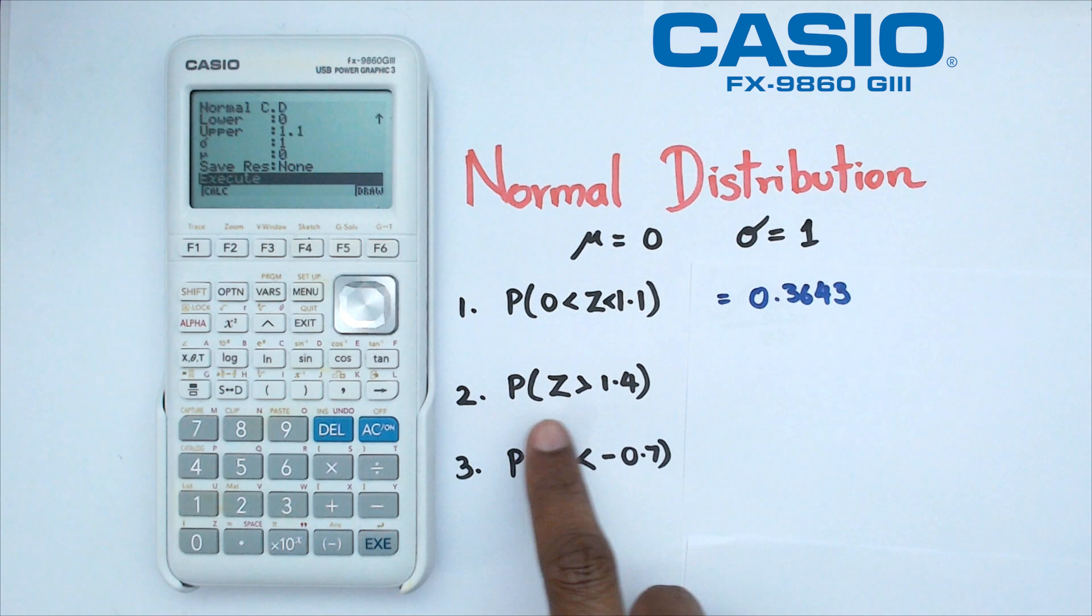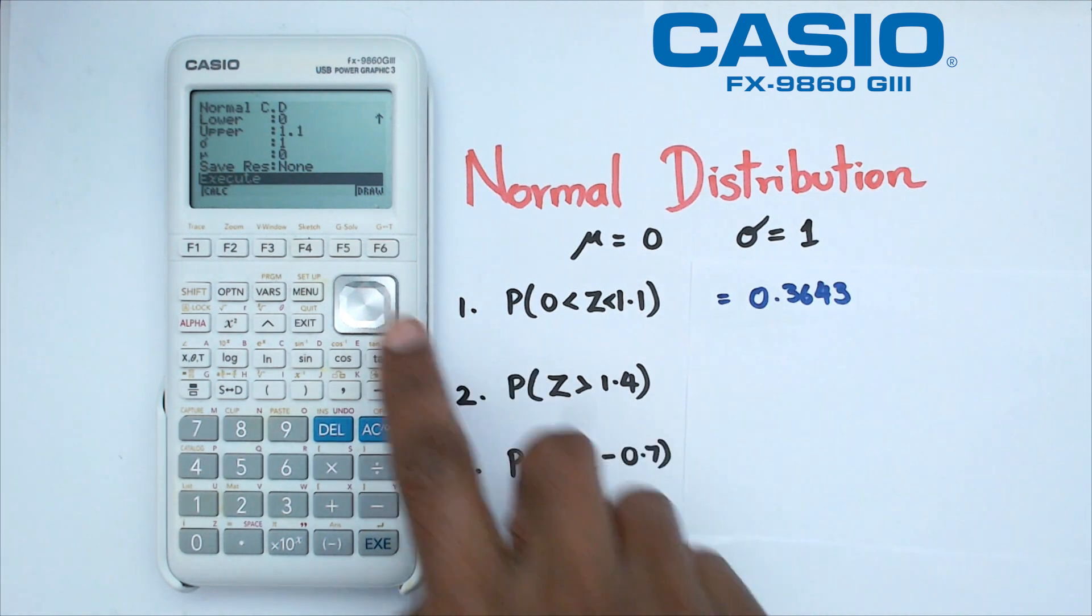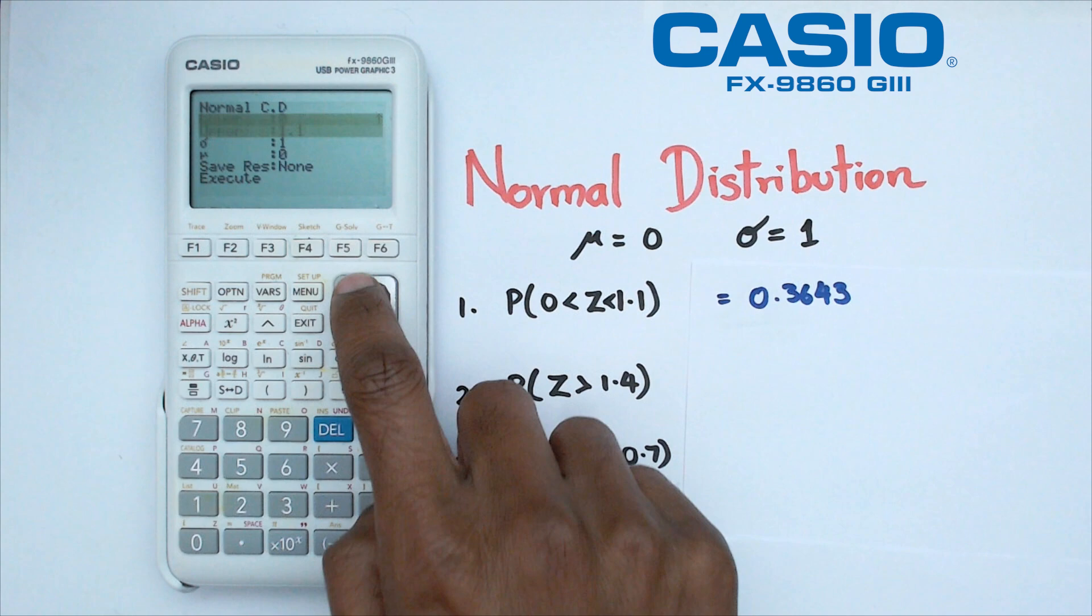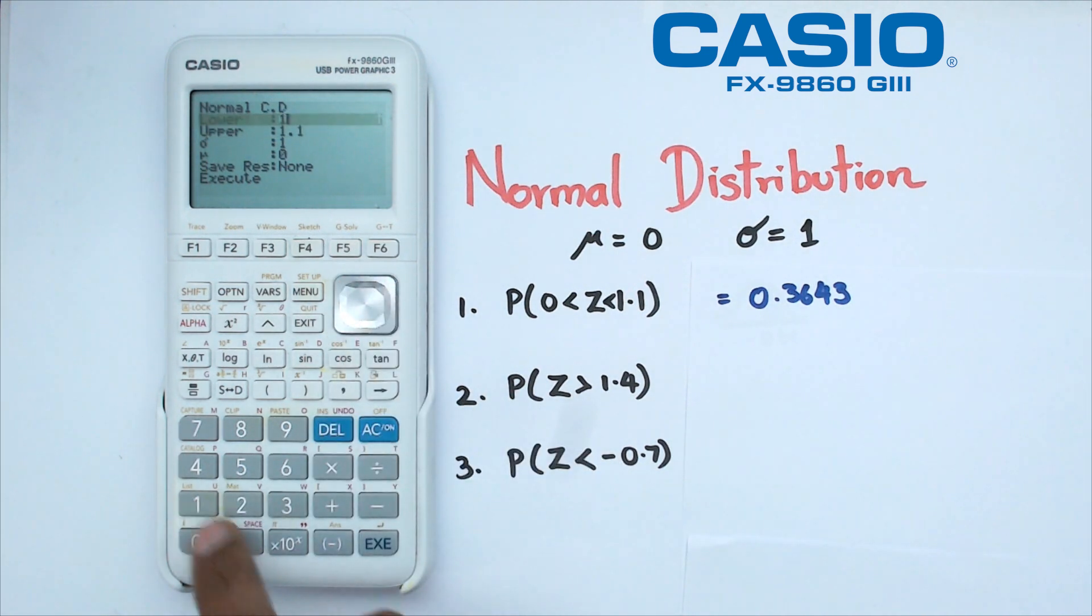All right, so let's try number two here where probability of Z is greater than 1.4. So in this case the lower limit is going to be 1.4. The upper limit, well if you really think about it,